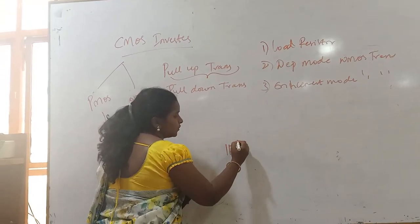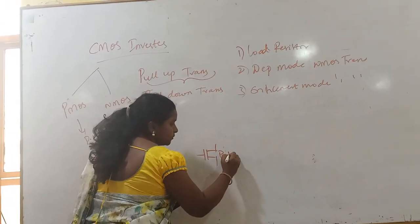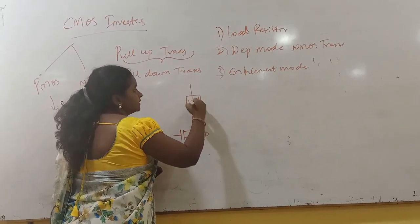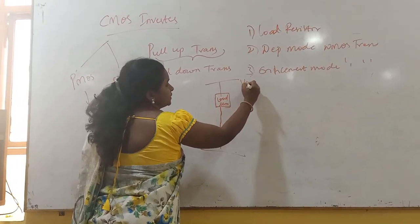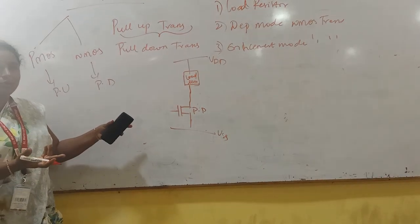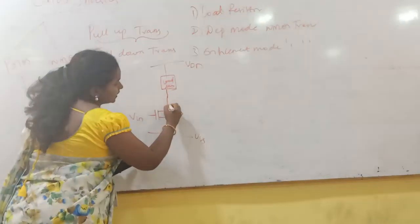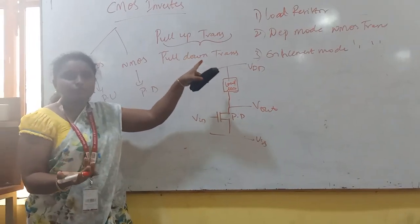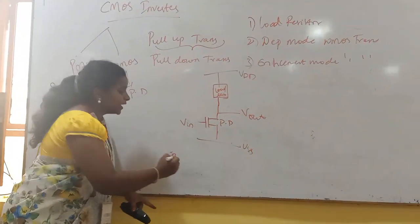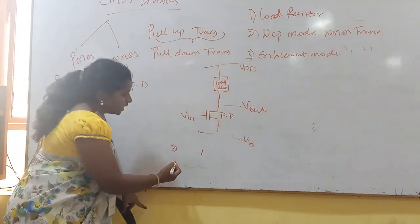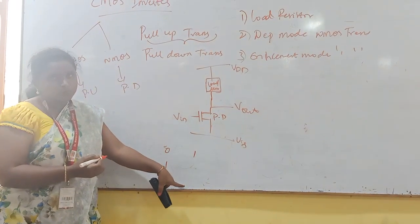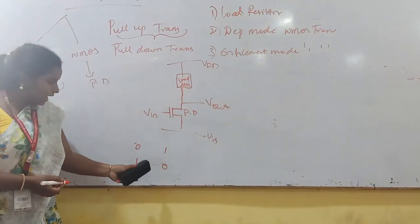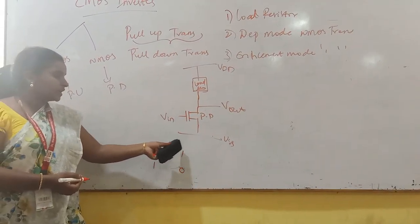In these 3 different types of various pull-ups, we will be having some disadvantages. For the first one, the pull-down transistor is the NMOS transistor — this is the pull-down transistor. And for the pull-up, we have a load resistor, connected to VDD, and the VSS at the bottom. The input VIN is applied at the gate, and the output is taken from the drain. This operates as an inverter: input logic 0 gives output logic 1, and input logic 1 gives output logic 0.